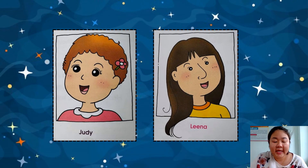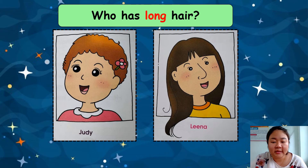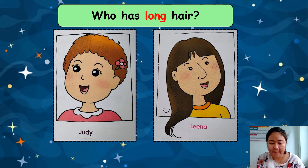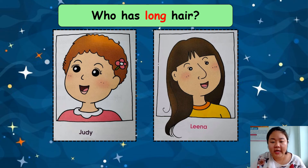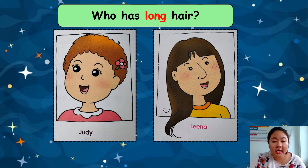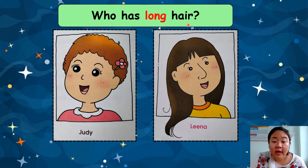The next question is: Who has long hair? I give you three seconds. The answer is Lena. Let's look at Lena's hair — ลีน่าเป็นคนที่มีผมยาว (Lena has long hair). Who has long hair? ใครมีผมยาว (who has long hair)?